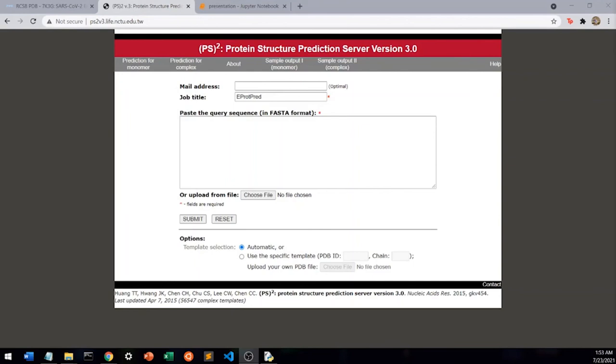Next, we will use the PS2 server for protein structure prediction to actually predict the 3D structure of our protein. In this resource, you upload the FASTA sequence of the e-protein and wait as it outputs a PDB file. The server works by blasting the protein and modeling it on similar proteins. This is called homology modeling.